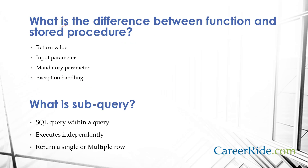What is the difference between a function and a stored procedure? First, a function must return a value, while a stored procedure may or may not return values. Second, a function can have only input parameters, while a stored procedure can have both input and output parameters. Third, a function must take one mandatory input parameter, while a stored procedure has no such compulsion. Fourth, a function does not support exception handling, while exceptions can be handled by a try-catch block in a stored procedure.